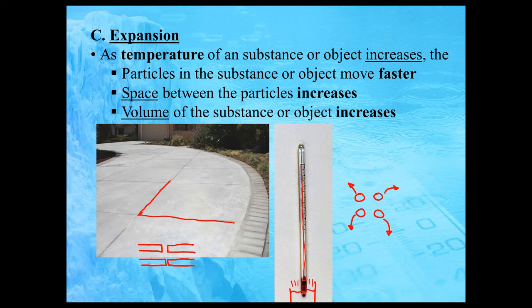If we didn't have that little gap — say the sidewalk blocks started off side by side and then expanded — they'd crash into each other, which would cause the sidewalk to break. So these little spaces between the sidewalk blocks give room for the concrete to expand into, and hopefully the concrete wouldn't crack as much — although, as I'm sure you've seen walking on the sidewalk, there still are a lot of cracks on sidewalks and roads.